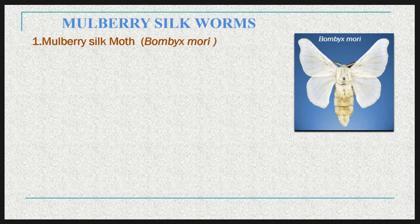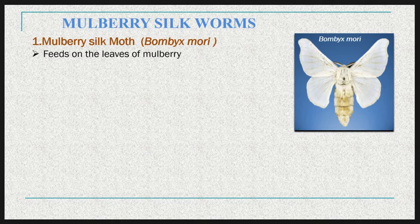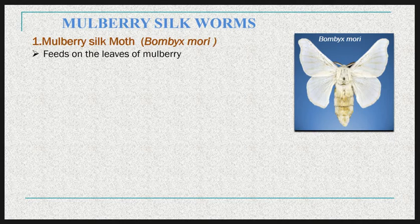Now let's discuss these silk moths in detail. The first is the mulberry silk moth. The scientific name is Bombyx mori. Bombyx mori, or the mulberry silk moth, is a completely domesticated insect never found wild, and has been exploited for over 4,000 years. It was domesticated from the wild silk moth Bombyx mandarina, which ranges from northern India to northern China, Korea, Japan, and the far eastern region of Russia. The larvae of the mulberry silk moth are foliage feeders; they feed on leaves of mulberry trees, which is why they are commonly known as mulberry silkworm.